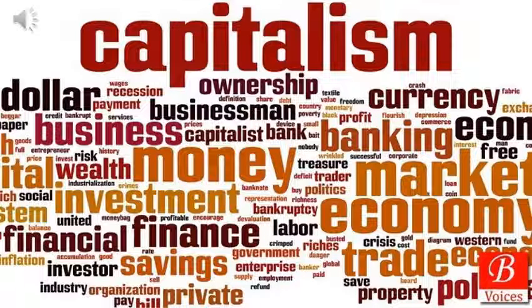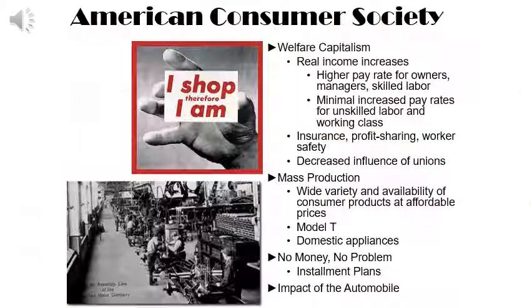The post-war consumerism era, helped by the capitalistic and consumerist nature of the American public, brought changes to American consumer society. This society can most aptly be defined as welfare capitalistic — with real income increases and higher pay for owners, managers, and skilled laborers, but very minimal increases for unskilled laborers and the working class. There were insurance benefits, profit-sharing incentives, and increased worker safety, but simultaneously a decrease in the influence and registration of workers in labor unions.